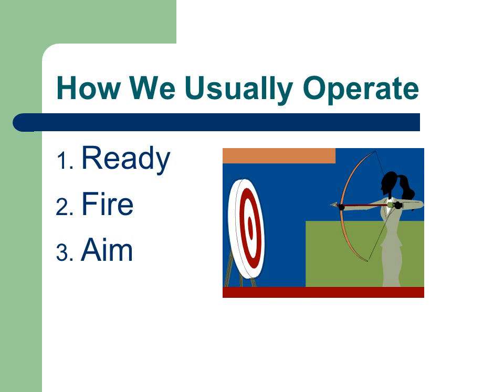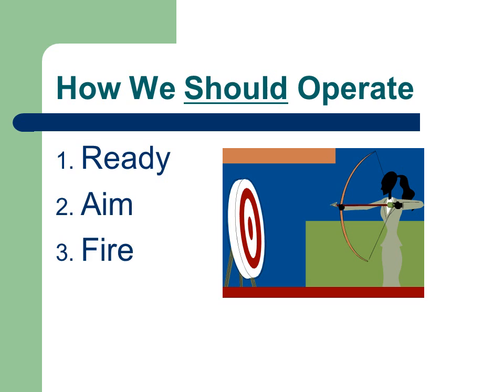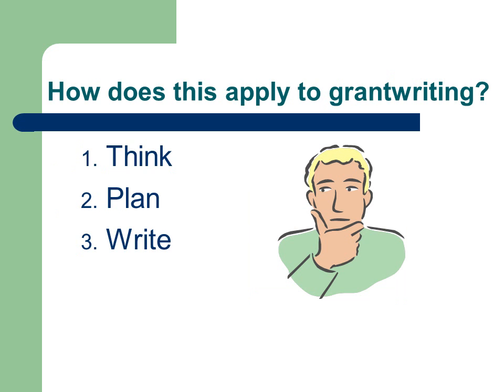We usually want to get right in there and do something — we operate on the principle of ready, fire, aim, when of course we should be doing the reverse: ready, aim, fire. In grant writing, that means we do a lot of thinking and planning, and then finally we sit down and put all of our ideas on paper in the form of a proposal to send to a funding organization.